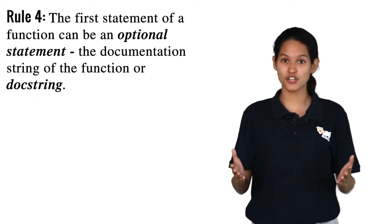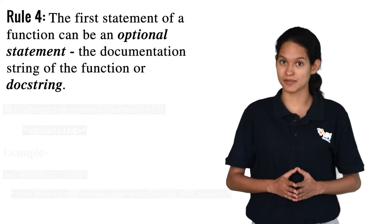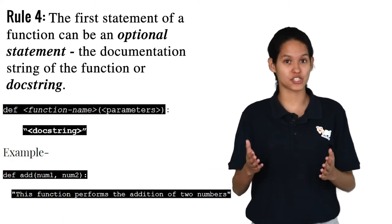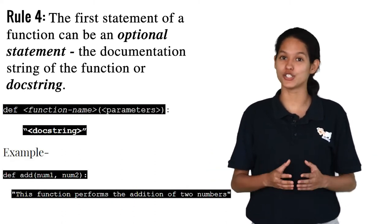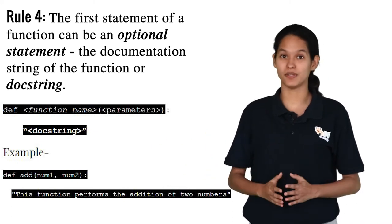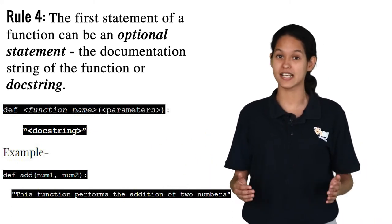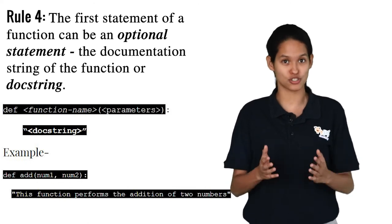Rule 4: The first statement in a function is an optional statement, the documentation string of a function or docstring. Here in this example, the function performs the addition of two numbers can be considered as the docstring.